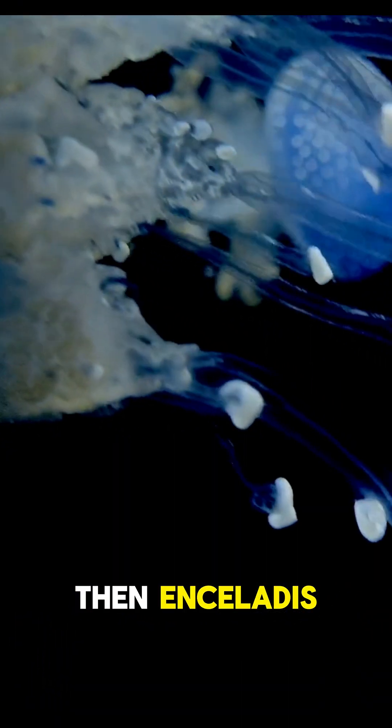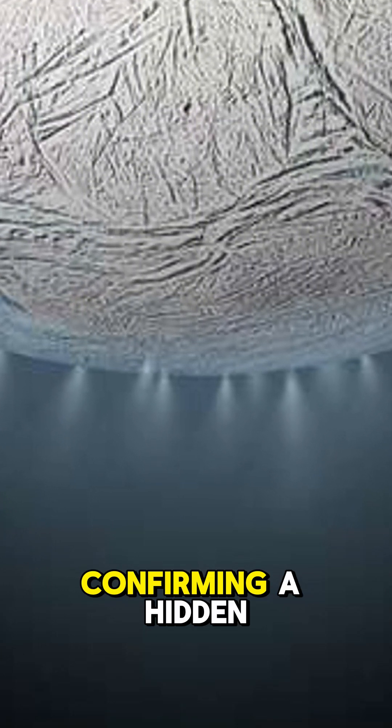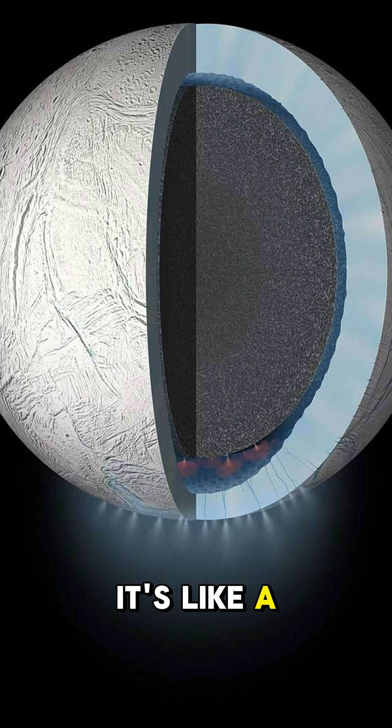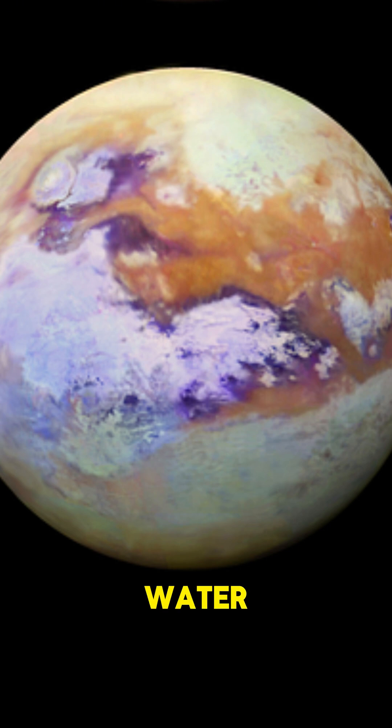Then, Enceladus. This tiny moon shoots out icy geysers confirming a hidden ocean. It's like a cosmic water park. And Titan. Forget water. It has seas of liquid methane and ethane.